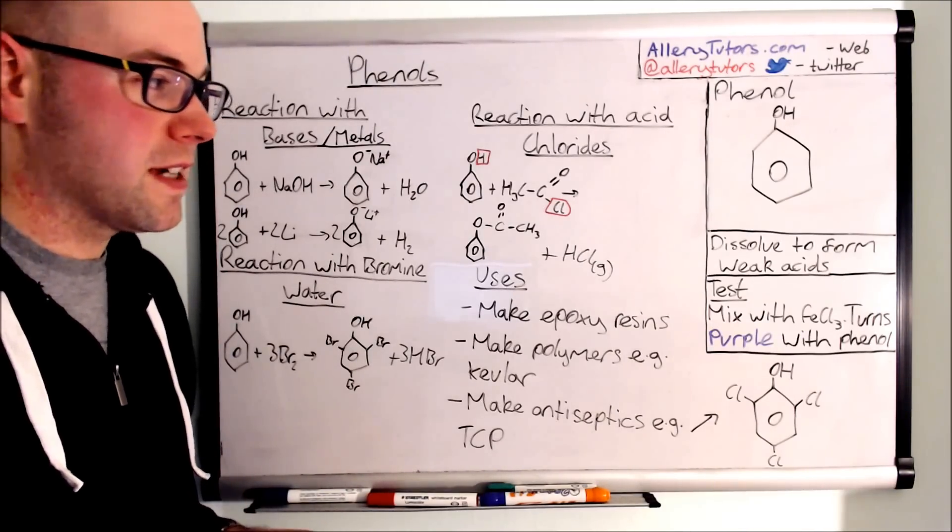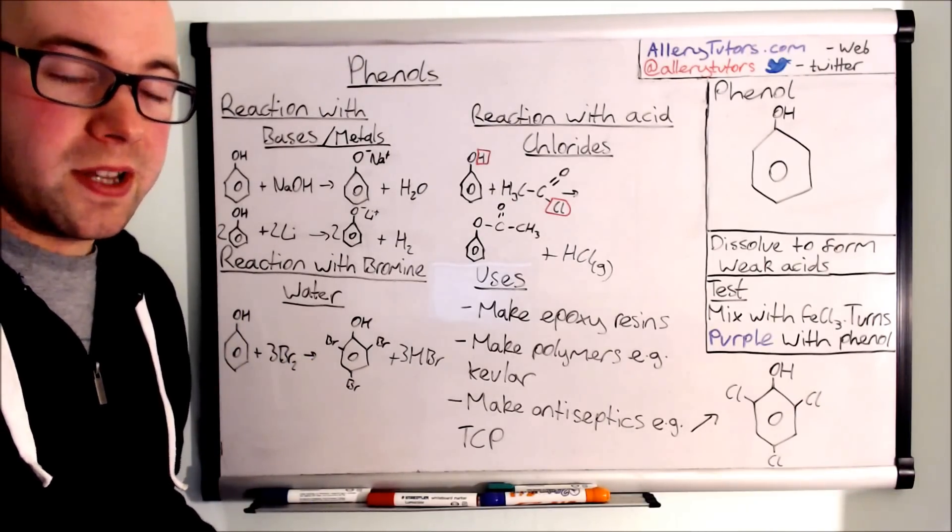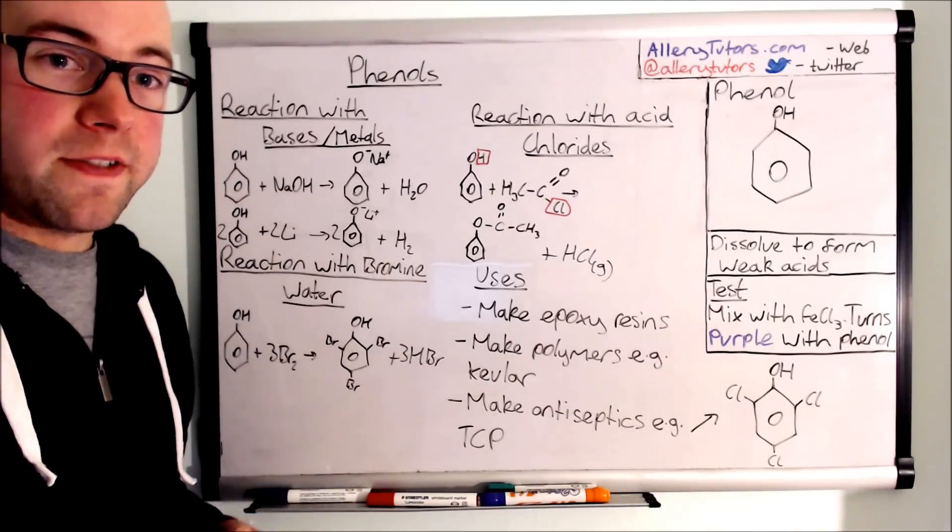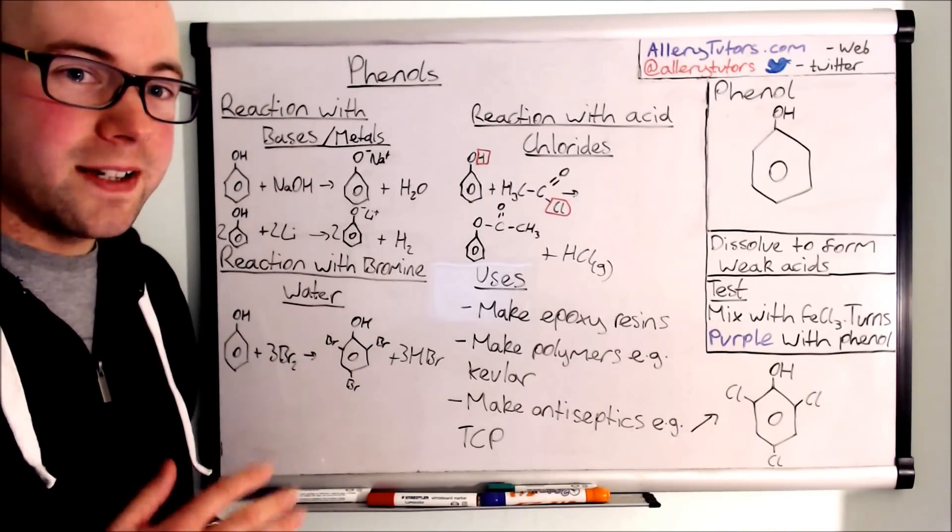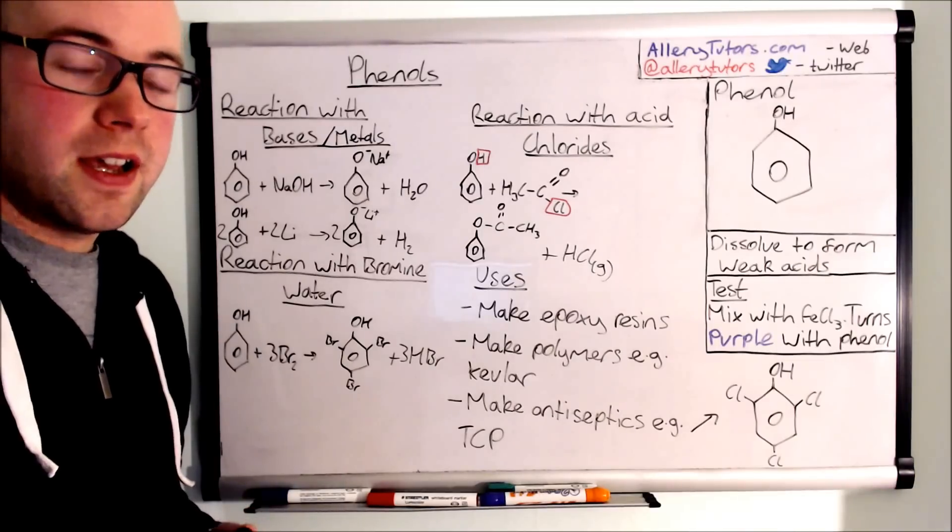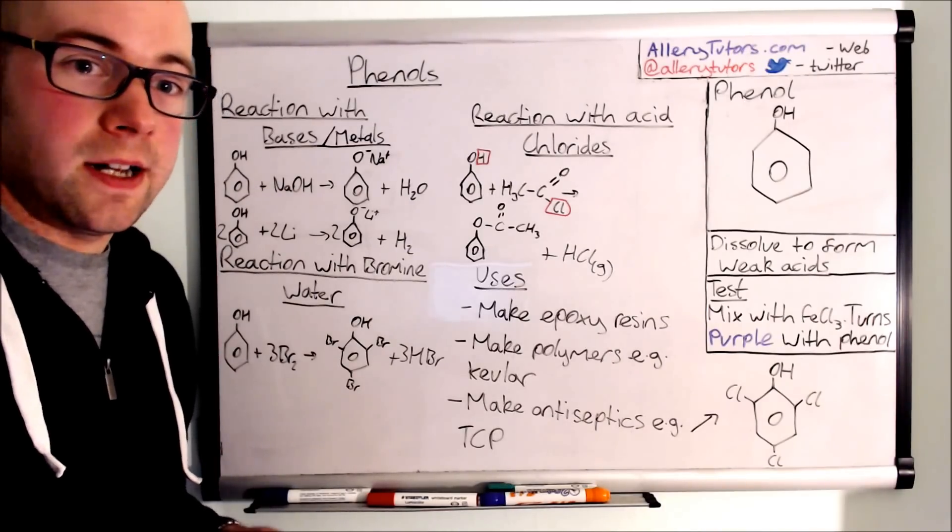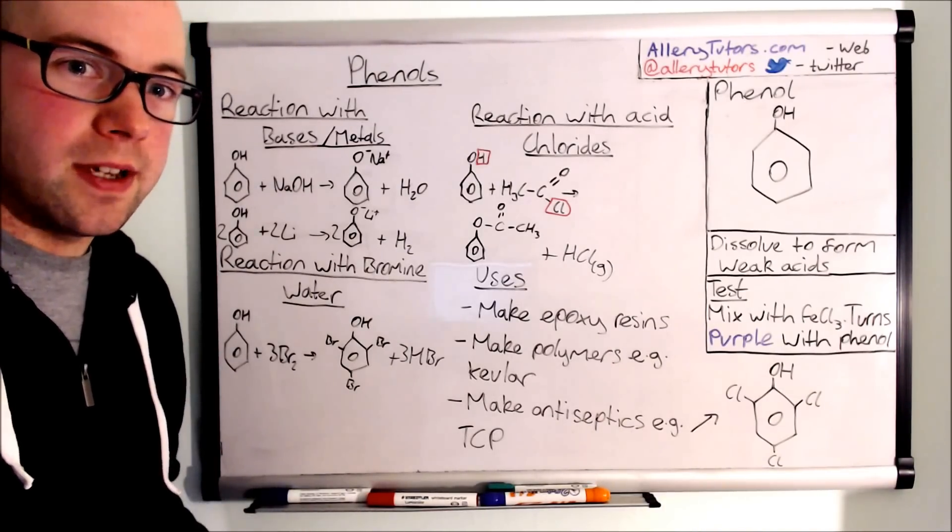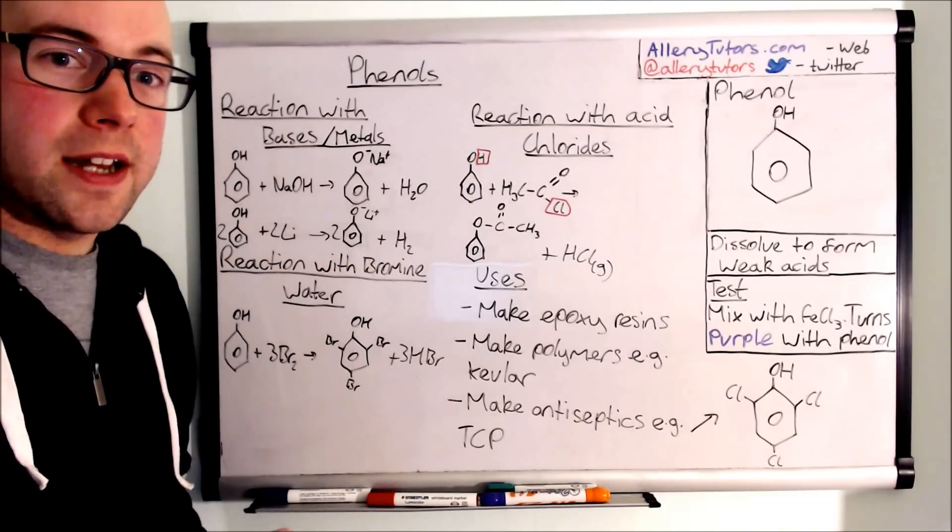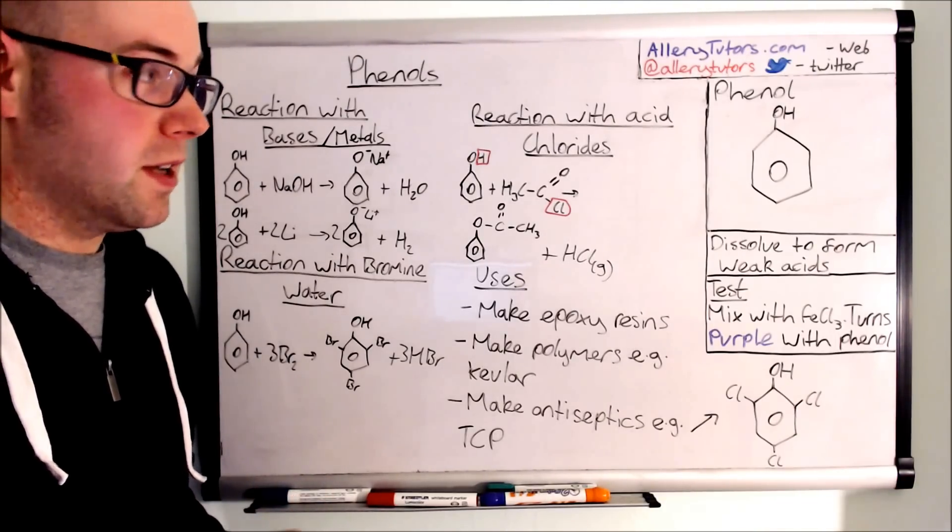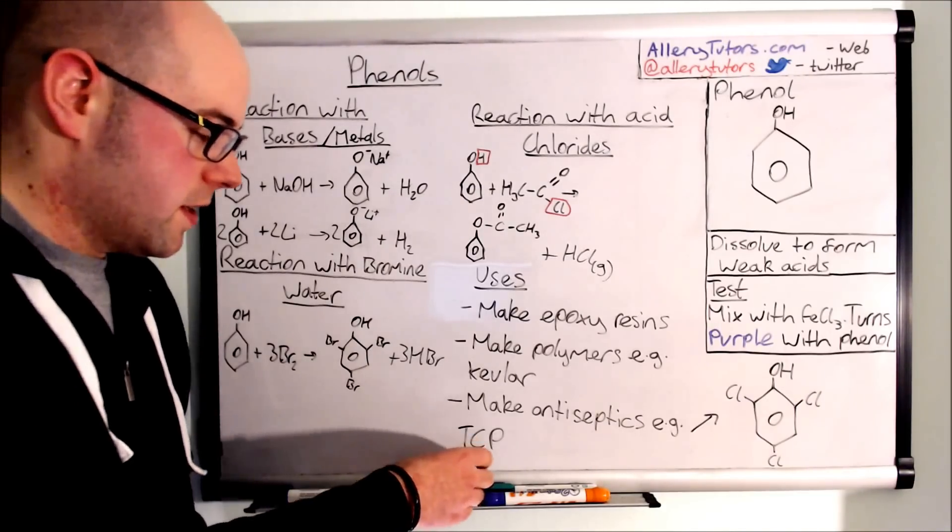One final thing is that phenols are a very common starting product for the synthesis of pharmaceuticals. They're normally found in crude oil. At the minute scientists are trying to look for new ways in which they can synthesize pharmaceuticals without an excessive use of phenol, because obviously we know that crude oil is running out quite quickly and as a natural source, phenol comes from crude oil. So very important to make sure we find an alternative.